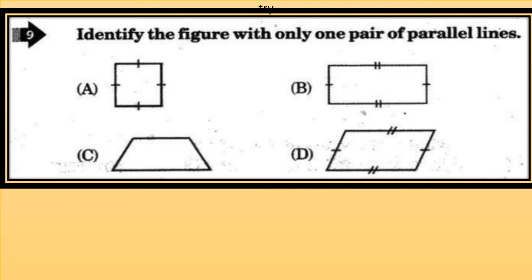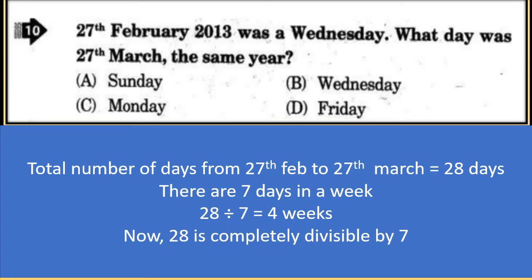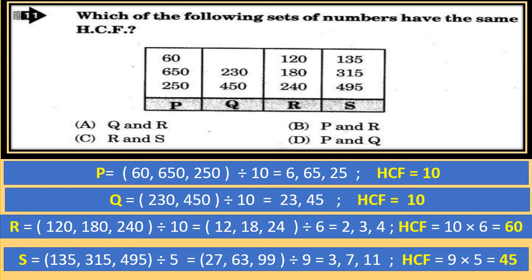Identify the figure with only one pair of parallel lines. Options A, B, and D have two pairs of parallel lines, while option C, which is a trapezium, has only one pair of parallel lines. The correct option is C. For the next question: 27 February 2013 was a Wednesday. Since 2013 was not a leap year, February had 28 days. From 27 February to 27 March is 28 days, which is exactly 4 weeks, so 27 March was also a Wednesday.